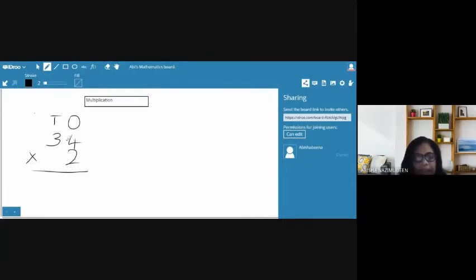Then 4 is in one place and 3 is in 10s place. Then 2. Only 2 is there. So, we need to write that 2 in one place. Then this number, we need to multiply with this second number. That is the multiplier. Right?